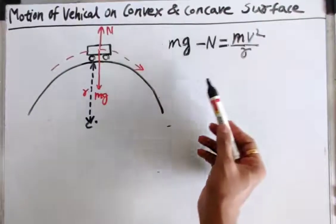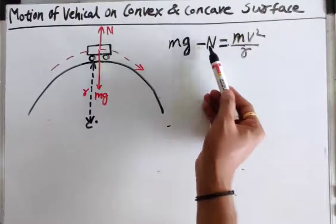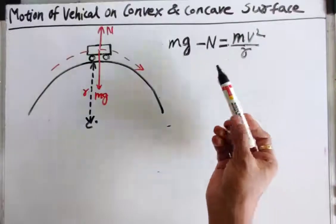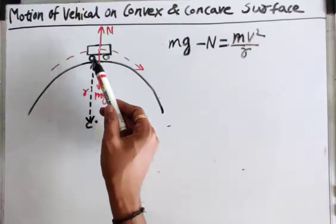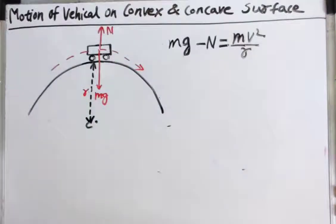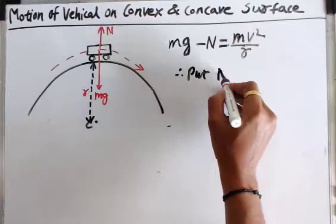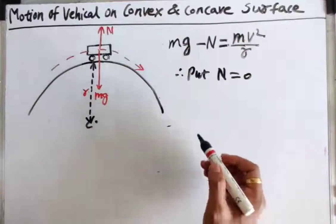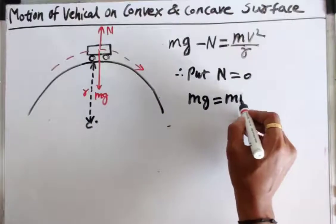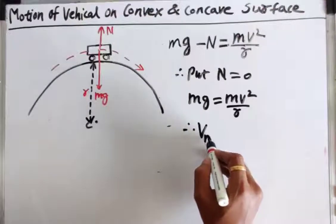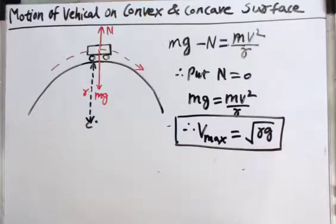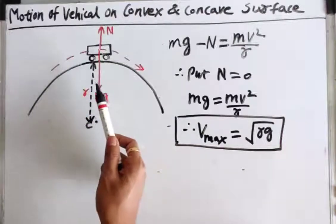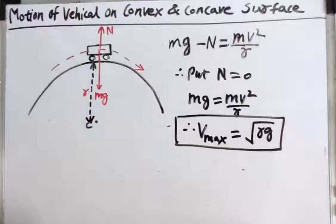This equation shows that as v increases, the normal reaction n decreases. Therefore, for finding the upper speed limit of a vehicle on this convex road so that it will just maintain contact with the road surface, we put n equal to 0. Putting n equal to 0 in this equation, we get mg is equal to mv² upon r. Therefore, v_max is equal to root of rg. This is the equation which gives us the maximum speed at the topmost position in the case of a convex surface, so that the vehicle will not lose contact with the road surface.